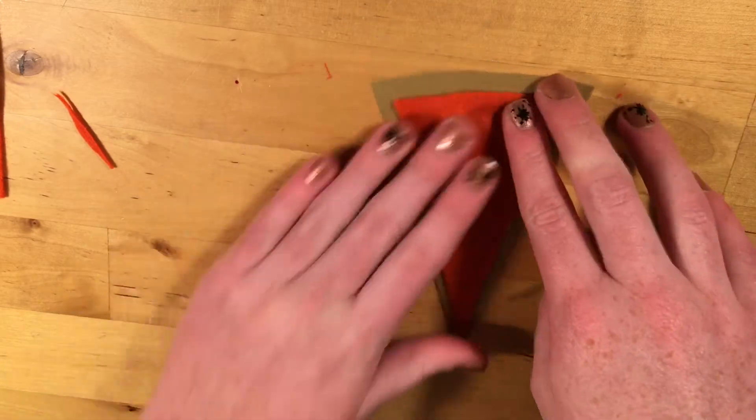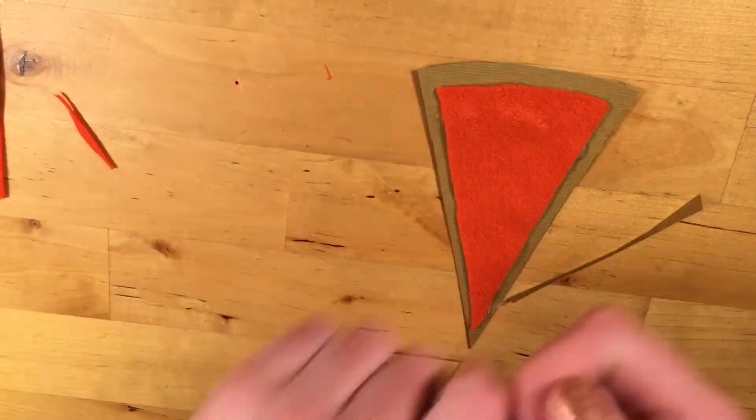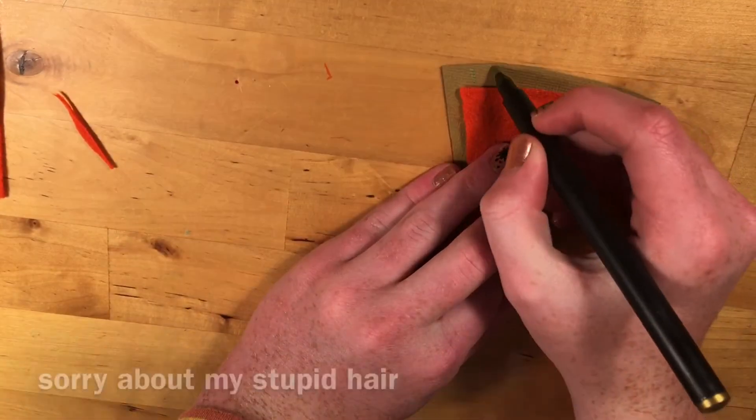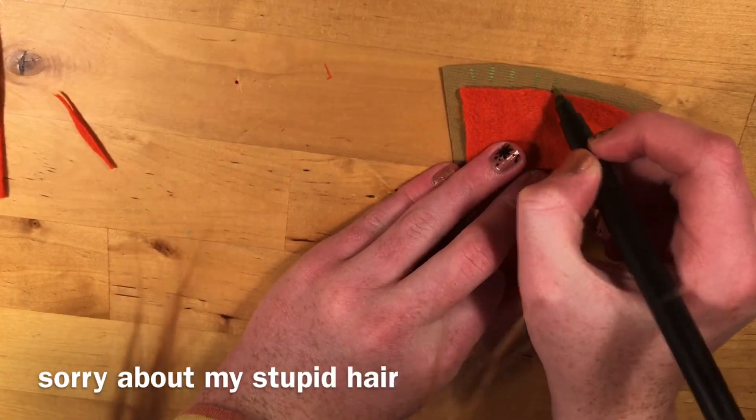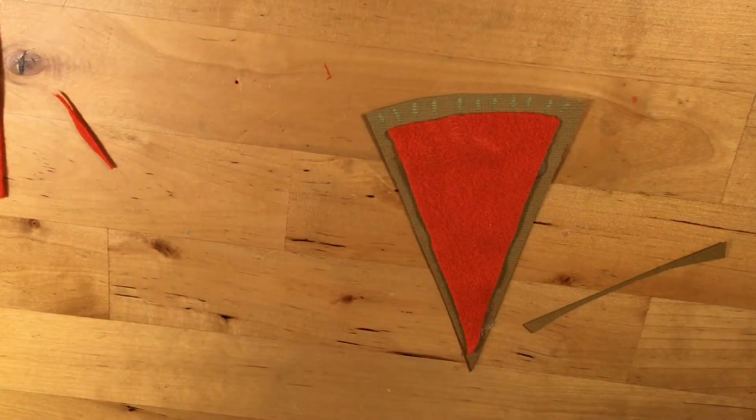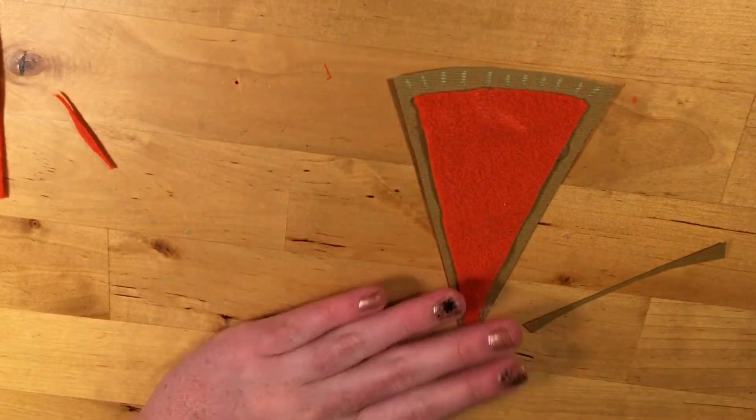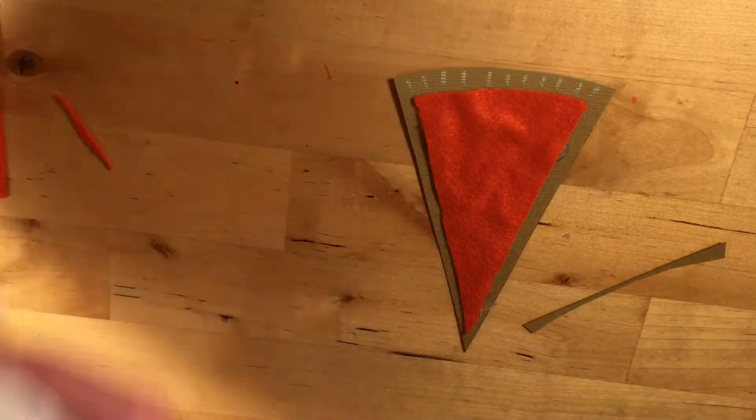And then what we can do is we can take a gold marker and just put some lines on the crust to give it that pie crust look. And you can just leave it here, but I think it's a little bit boring to just leave it like that.